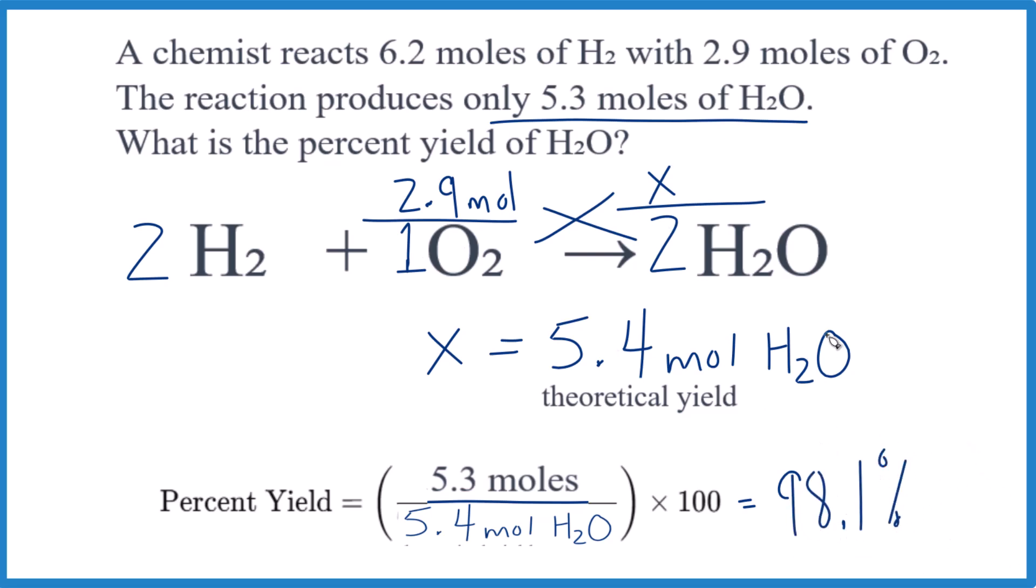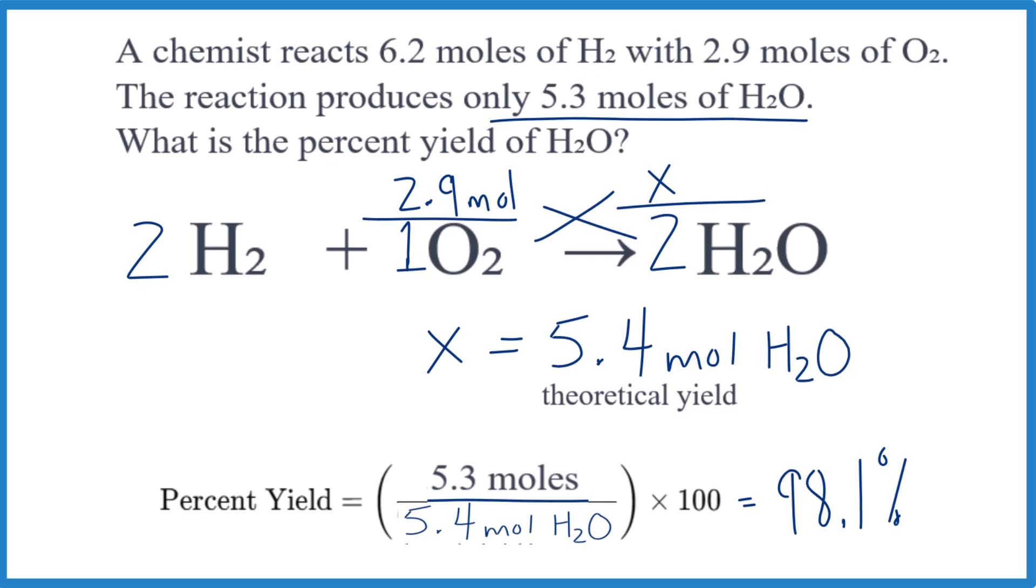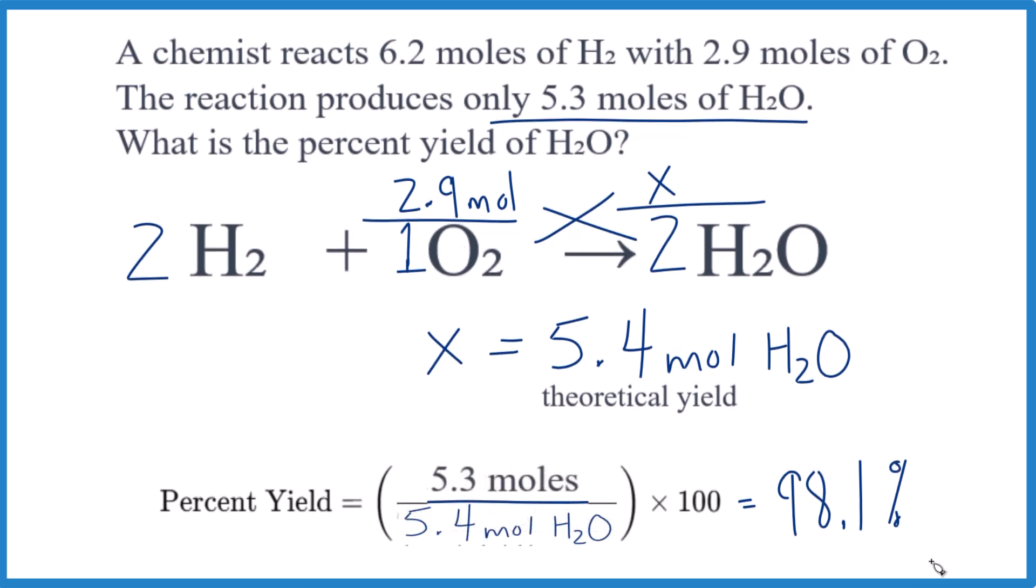So to recap, find the theoretical yield. You're given the actual yield in the problem. Use this equation here. You divide, multiply by 100, and that gives you the percent yield.